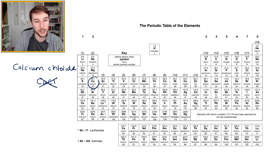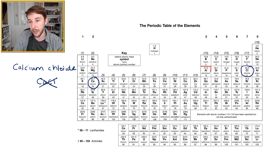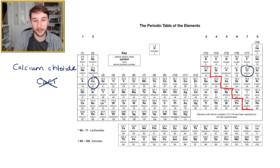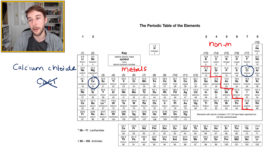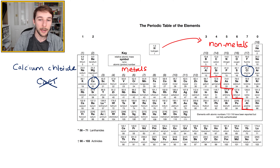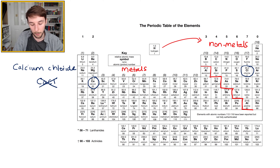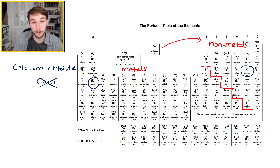Calcium chloride contains calcium and chlorine. We first need to distinguish between metals and non-metals using the staircase on the periodic table. Metals are on the left-hand side, non-metals on the right. We should also consider hydrogen as a non-metal. Knowing whether an element is a metal or non-metal lets us apply rules to work out the charge of its ion, and then construct a formula that is overall neutral.